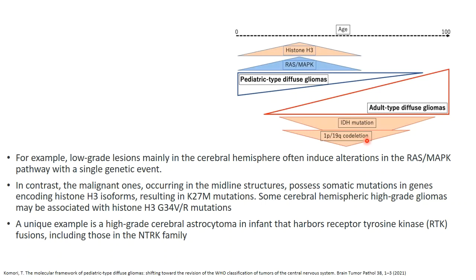A unique example is a high-grade cerebral astrocytoma occurring typically in infants that harbors receptor tyrosine kinase (RTK) fusions, including the NTRK family fusions. This is the only unique case that differs from both the pediatric and adult classification patterns, and is typically very important to note.